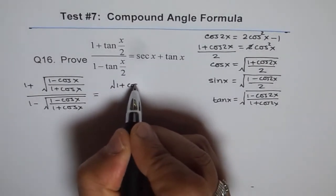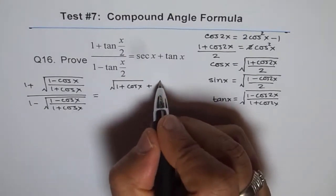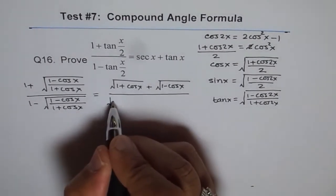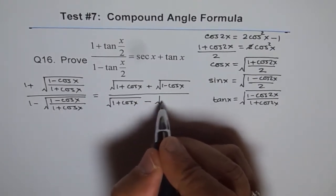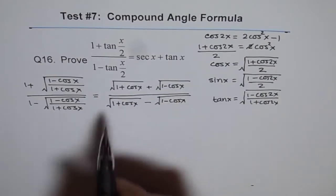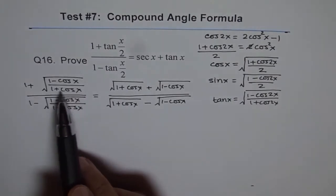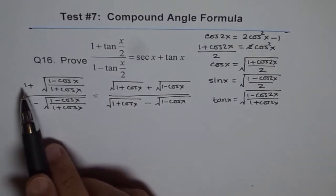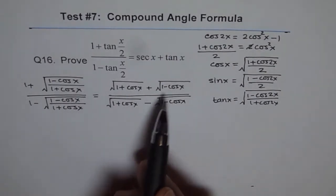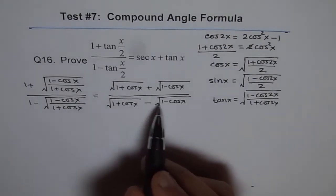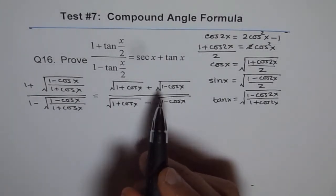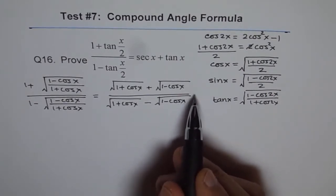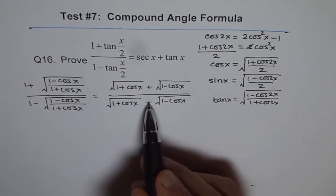After multiplying by √(1 + cos x), the numerator becomes √(1 + cos x) + √(1 − cos x), and the denominator becomes √(1 + cos x) − √(1 − cos x). In this step, 1 × √(1 + cos x) gives the first term, and the √(1 + cos x) factors cancel in the second term. Next, we'll rationalize this expression.